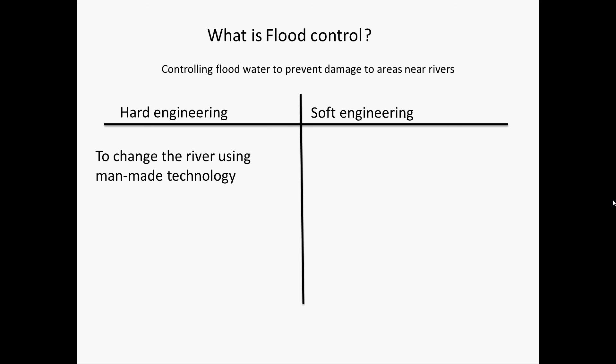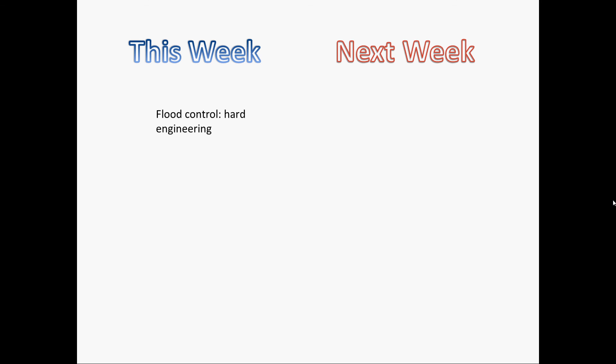We can add to our Hard Engineering side of the table what Hard Engineering is — to change the river using man-made technology — and what it's used for, which is usually to stop flooding of human settlements, like river straightening. This week we've looked at Flood Control Hard Engineering, and next week we'll look at the Soft Engineering side of Flood Control. Bye!